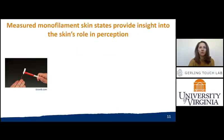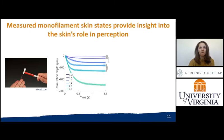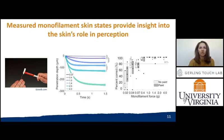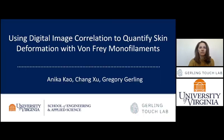In this work, we evaluated mechanical states of skin deformation by low force monofilaments using 3D digital image correlation. The results indicate that the 3D DIC approach achieved sufficient resolution and range to capture distinct states of skin deformation at just the most noticeable thresholds of absolute detection and discrimination. Thank you.